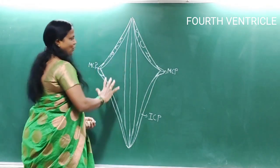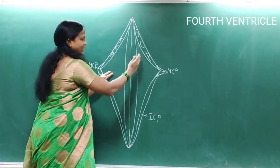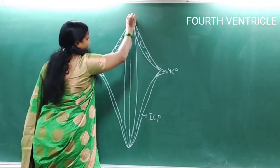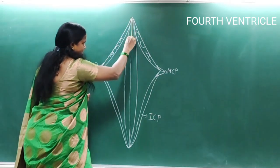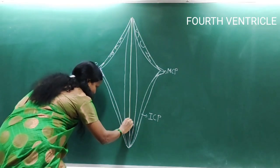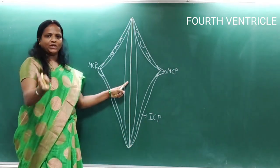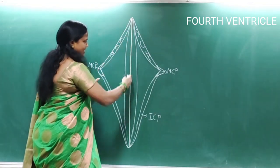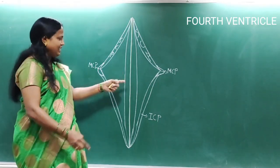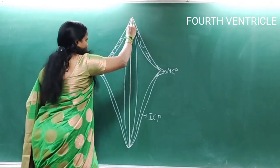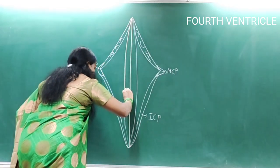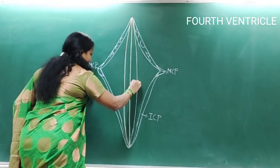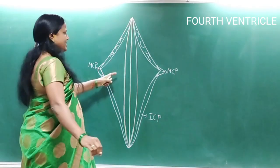The floor of the fourth ventricle is divided into two symmetrical halves by a sulcus called the median sulcus. Lateral to the median sulcus, one on either side, there is a curved line with convexity laterally and concave medially, called the sulcus limitans.